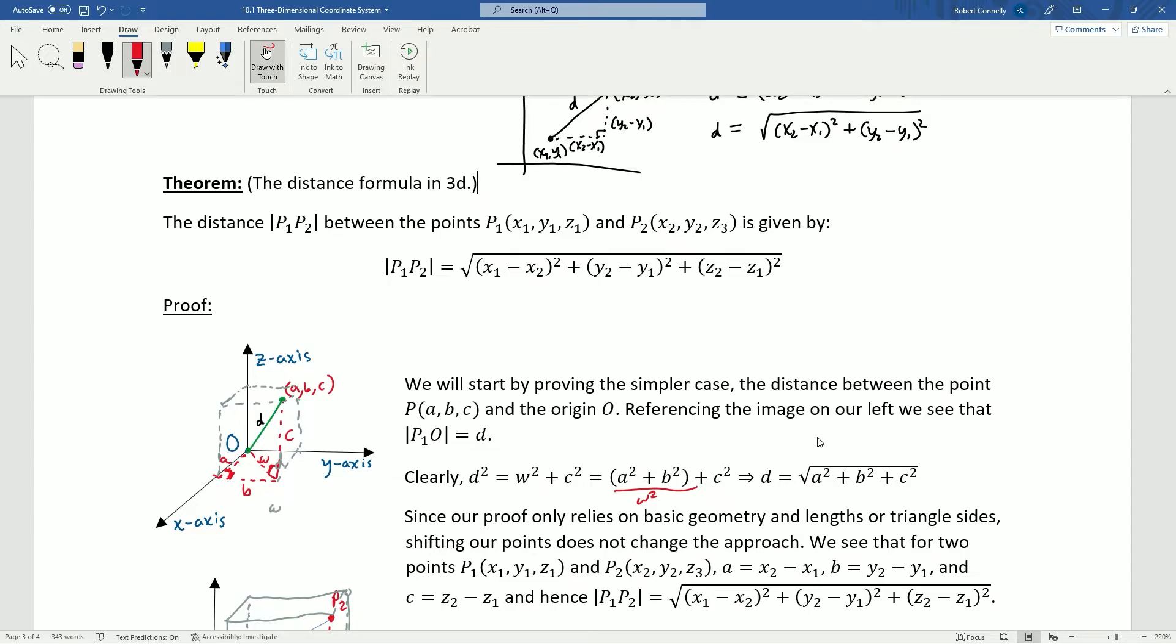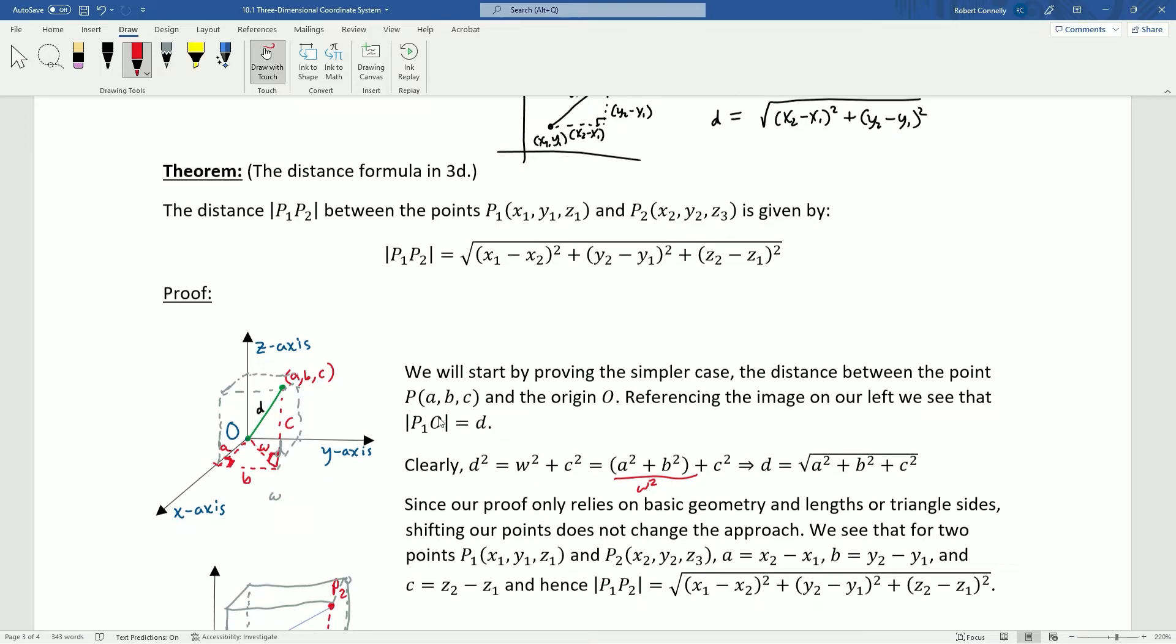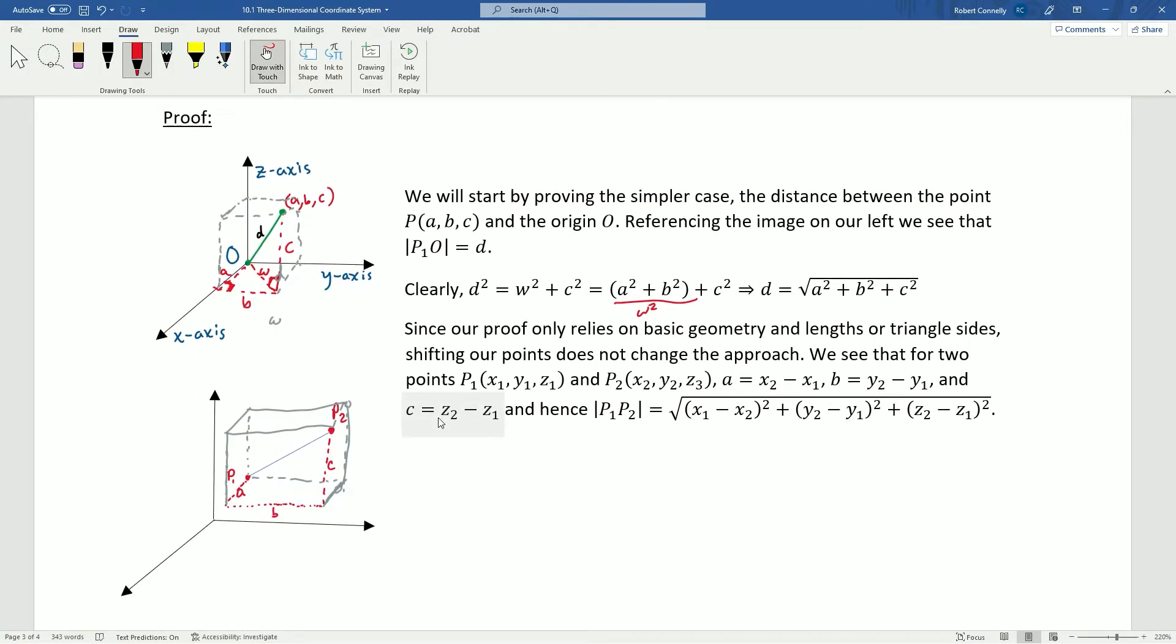But, keep in mind that everything we did here was just based on geometry, because really A, B, and C were just distances between the points. So, if we were to move this and actually take the distance between two arbitrary points, A, B, and C would just become the distances x₂ minus x₁, y₂ minus y₁, and z₂ minus z₁. And then we plug those in place of A, B, and C, and that's our general formula for distance.